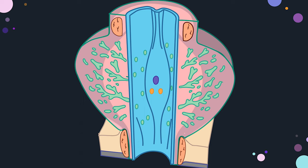The verumontanum is a very important landmark with surgical value during transurethral resection of the prostate (TURP). Because the surgeon cannot see from outside, the verumontanum acts as a landmark that demarcates a boundary. If the surgeon goes beyond this point during resection, there is a fair chance of causing damage to the external urethral sphincter. If the external urethral sphincter is damaged, the patient will become incontinent.